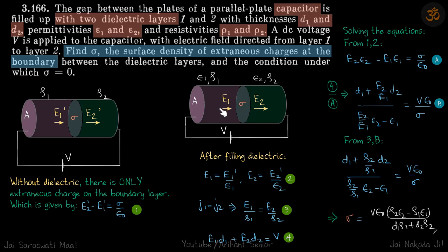Now, we know that the fields within the dielectric are related to the field outside dielectric by a factor of epsilon. This is without dielectric, so if you divide this by epsilon you get the value inside the dielectric. E2 will be E2 dash by epsilon and similarly E1 will be E1 dash by epsilon 1.